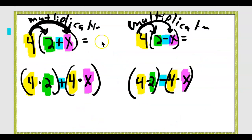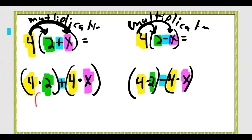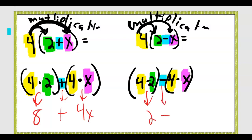That's what this distributive property is — a wink and a smile. Here's how it breaks down more: four times, and this is an upside-down wink and smile. Four times two, then four times x — four times two and four times x. This one would be with subtraction in the middle, this one with addition.